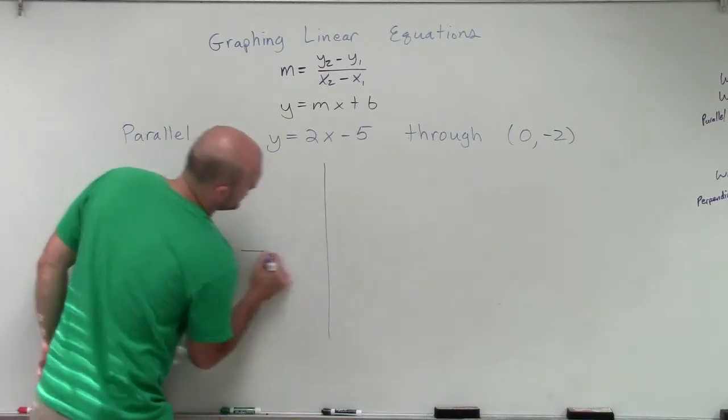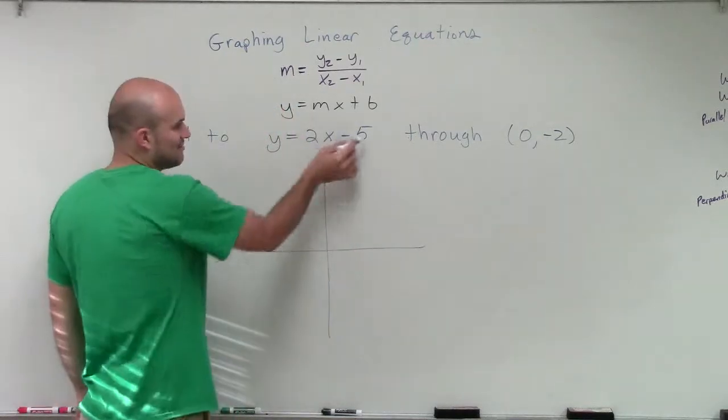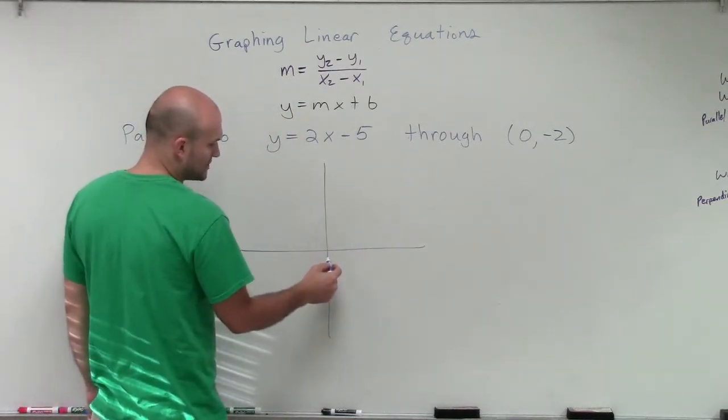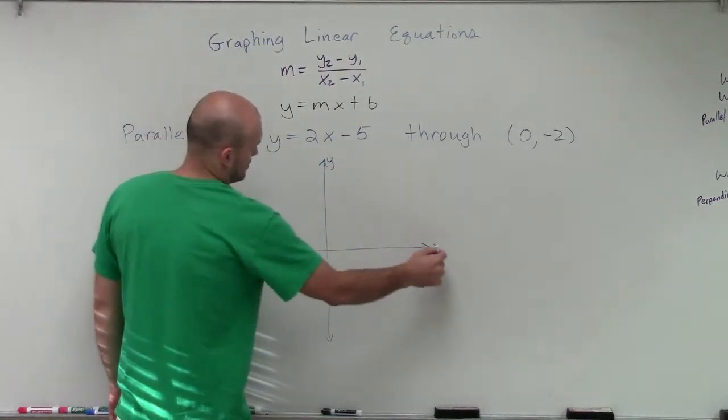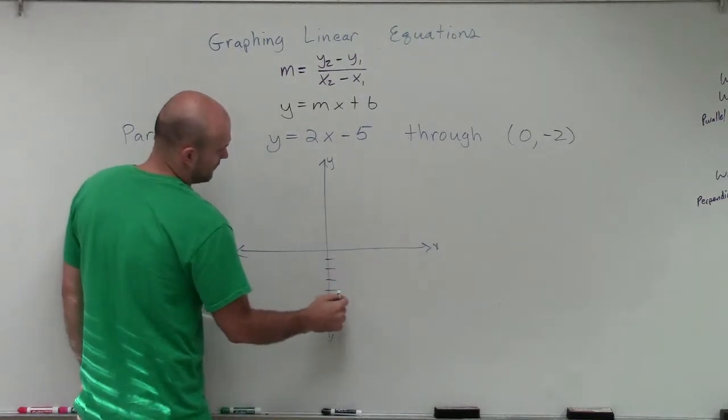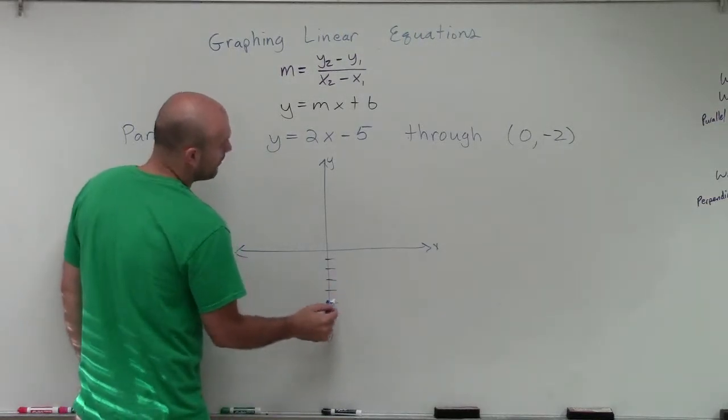So let's go and graph 2x minus 5. Minus 5 is going to be my y-intercept, so I'll go down 5 units on the y-axis. So 1, 2, 3, 4, 5, and I'll make a nice big dot for my y-intercept.